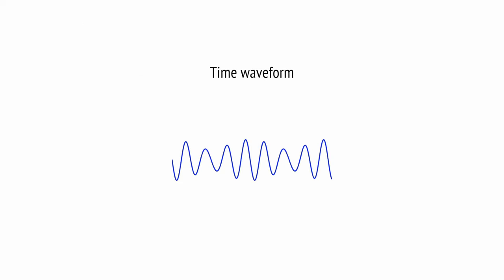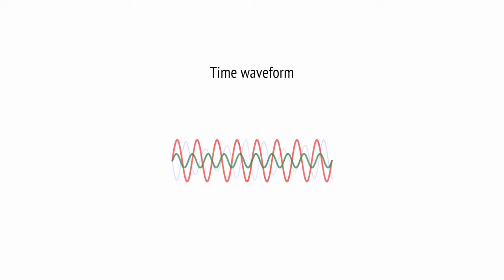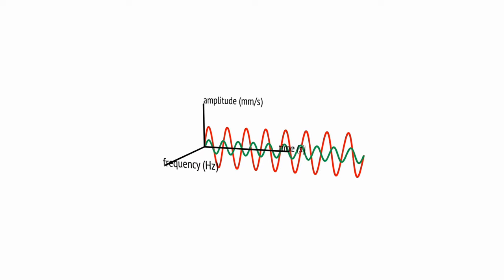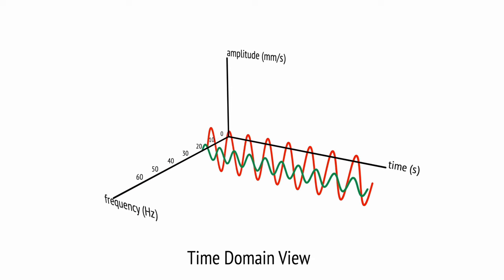Now we have a digital signal in the analyzer and we can work with it. For example, we can display it in its time domain form, the time waveform. However, a more informative representation is the frequency domain. As shown in the previous video, the spectrum reveals the frequencies that compose the vibration signal.